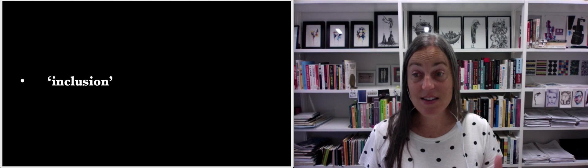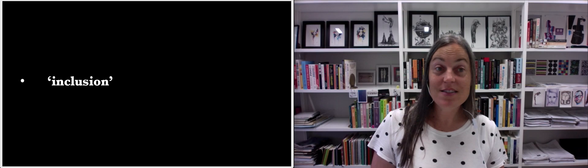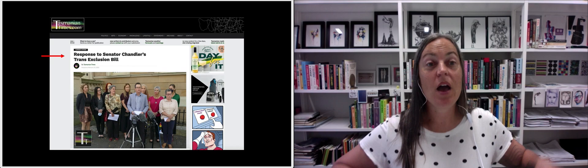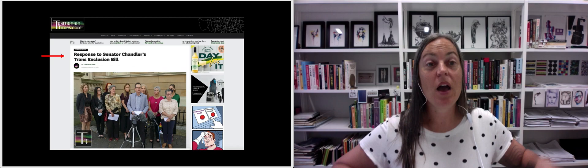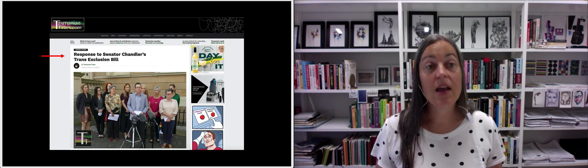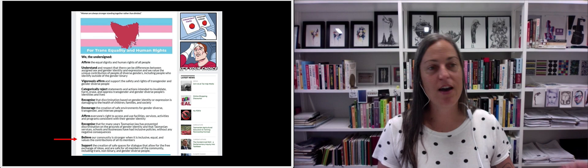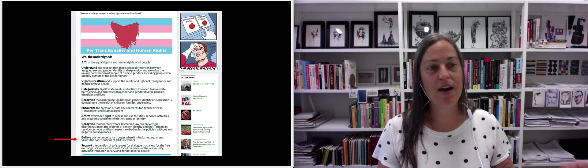So there are loads of examples I could have given here, because inclusion is possibly the key word of those who are pushing to have gender identity replace sex in law and policy. But because Senator Chandler is our keynote speaker, and because there's a protest outside targeting her bill, and because this article from Wednesday's Tasmanian Times talks about it, I've chosen it as illustrative. So the headline refers to Senator Chandler's trans-exclusion bill. Variants of the word inclusion appear five times in the text of the relatively short article, and once in the image of an open letter that's attached at the bottom of the article. This week, Tasmanian women will unite in support of transgender inclusion, the article claims. We, the undersigned, believe our community is stronger when it is inclusive, equal, and values the contributions of all its members, the open letter declares.